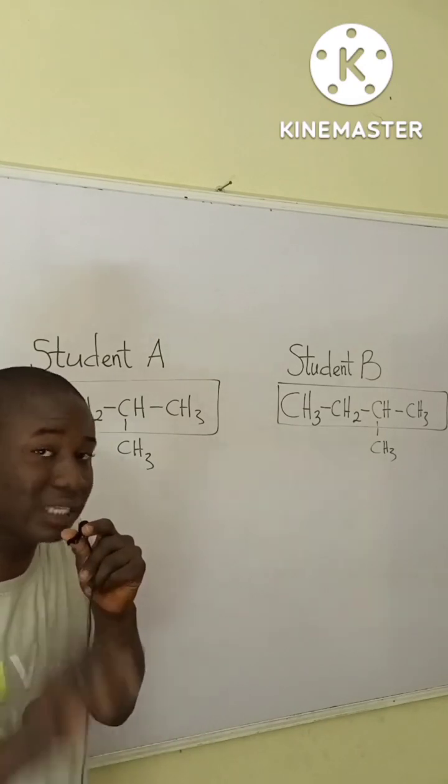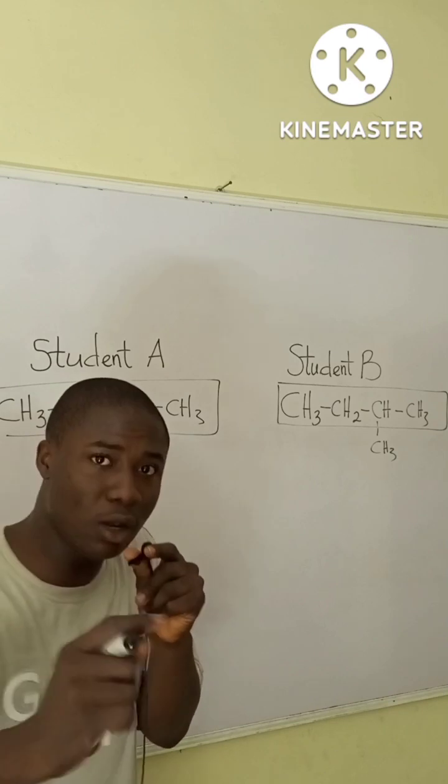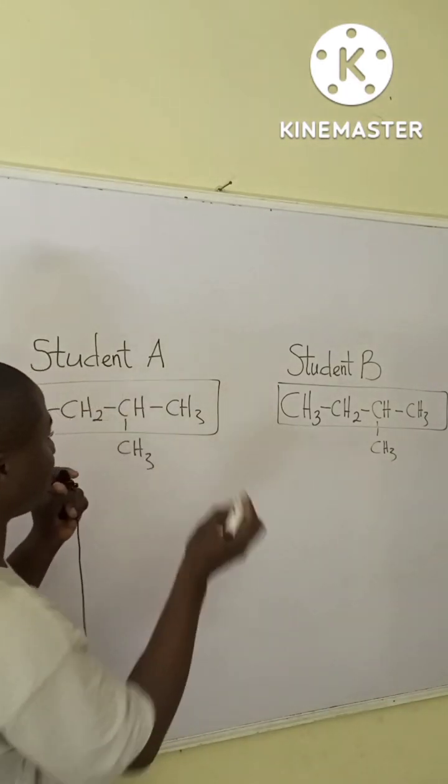Now, you can see that both students are actually working in the same direction. So, the next of the steps here is to simply number the longest continuous carbon chain. Now, let's say student A numbered in this direction.